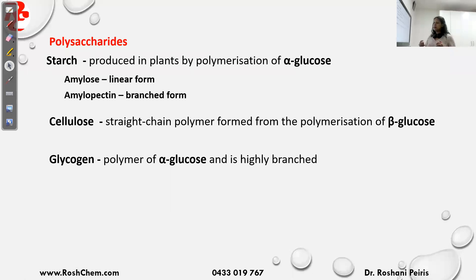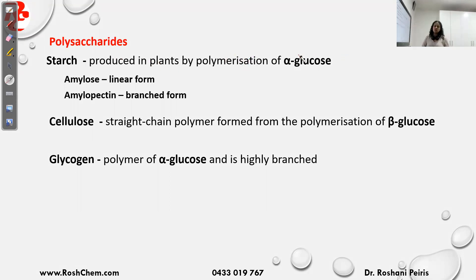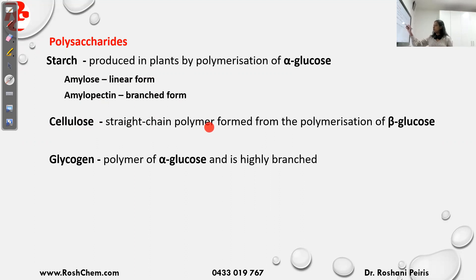Polysaccharides are polymers made from many monomers or many glucose units. Between each two glucose units, a water molecule is removed. We learn three polysaccharides: starch, cellulose, and glycogen. Starch is produced in plants by polymerization of alpha glucose, and has two forms — amylose, which is the linear form and insoluble in water, and amylopectin, which is the branched form and soluble in cold water. Cellulose is a straight chain polymer formed from polymerization of beta glucose. Glycogen is the energy-storing molecule in our body, formed from alpha glucose, and is highly branched.